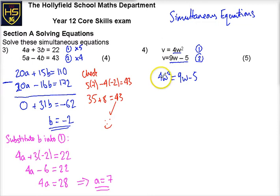So here I've created a quadratic equation, so that's 4W squared minus 9W plus 5 equals 0. So this is, I've created a quadratic equation here.